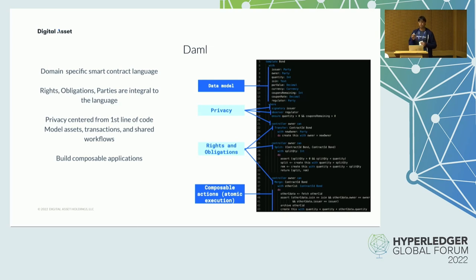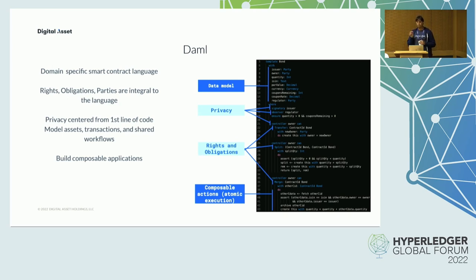DAML adds primitives that define and enforce the schema, semantics, and execution of transactions between parties. It allows codifying programmatically enforced contractual rights and obligations between parties. DAML's privacy model, which extends to the sub-transaction level on the ledger, mathematically guarantees that parties are only privy to the data on the ledger that has been shared with them. For every smart contract on the ledger, DAML calculates the precise list of parties allowed to view that contract.